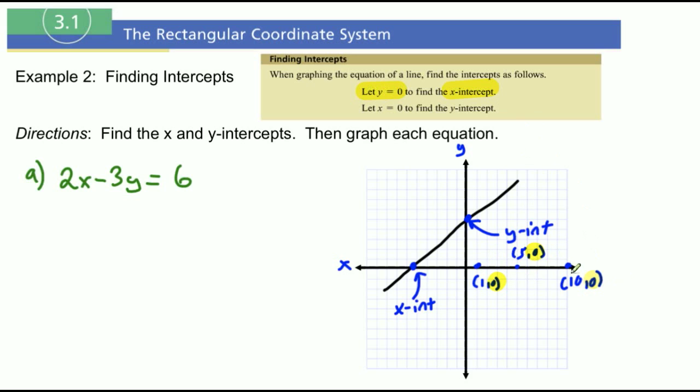You see? If you have any x-intercept, the y-value is 0. And that's where that comes from. And then you can do the same thing for the y-intercept. The x is always going to be 0, so that's why you always let x equal 0 when you want to find the y-intercept. That's kind of where that comes from.